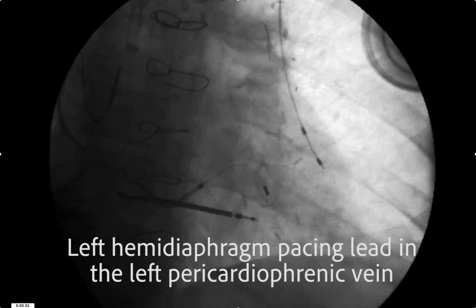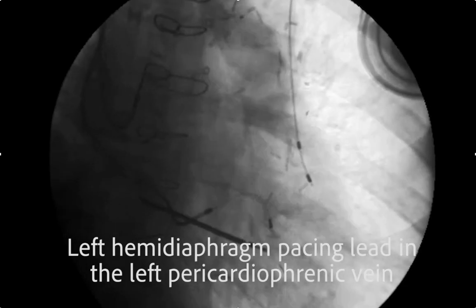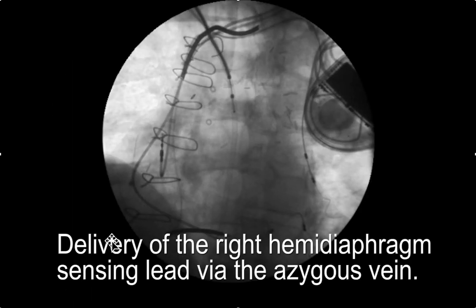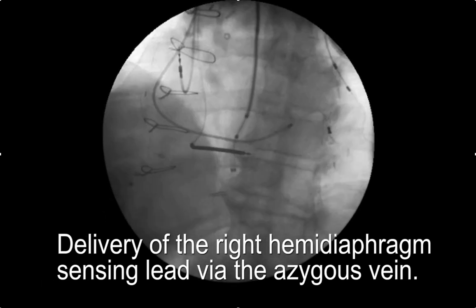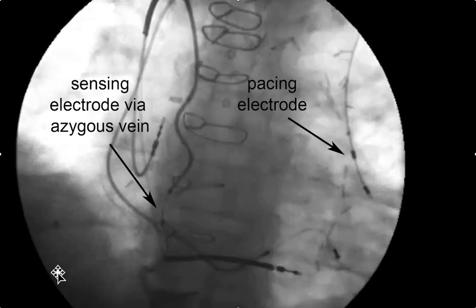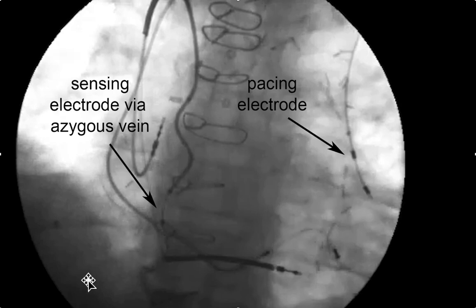The pacing lead is now in the left pericardiophrenic vein, and we have another lead that senses the diaphragm, placed by the azygous on the right. So in the end, the system has a sensing electrode by the azygous on the right side which watches to see if there's any diaphragmatic attempt at breathing, and if there's not, the pacing electrode stimulates the left hemidiaphragm. It's not a twitch stimulation — it's a constant stimulation, which patients don't seem to mind.